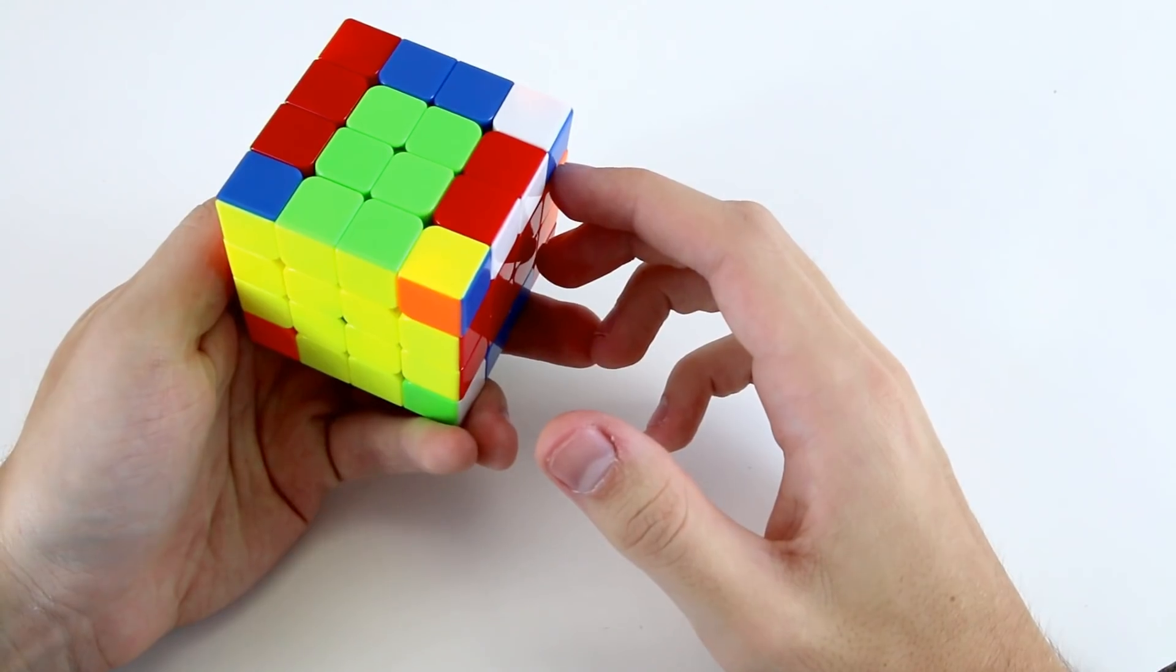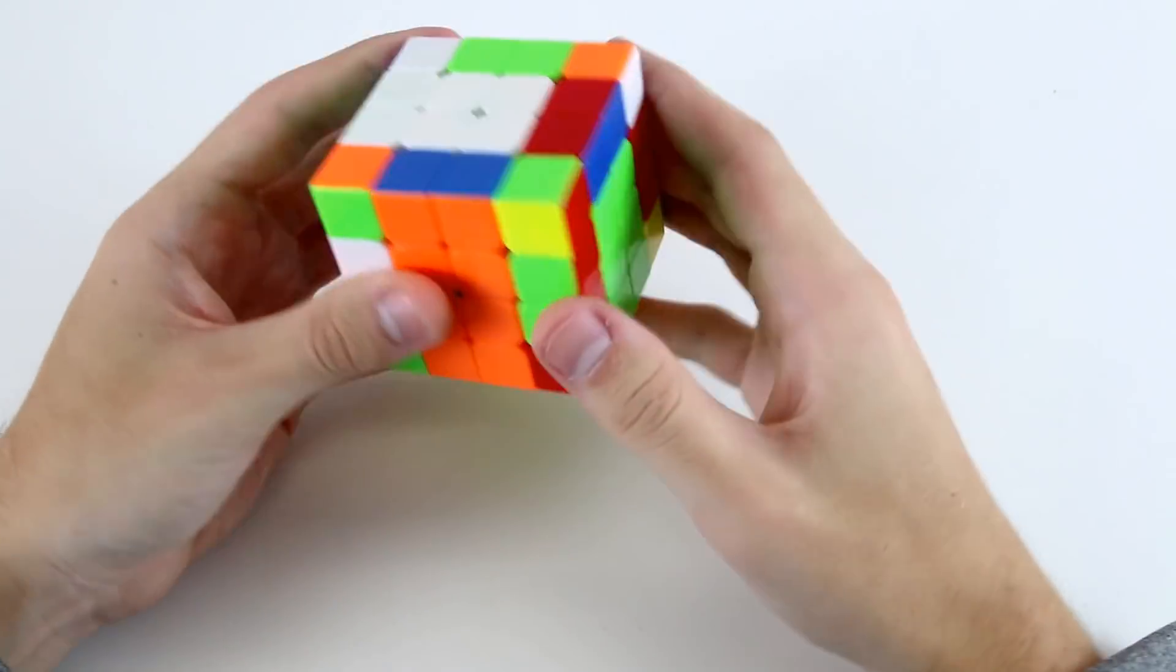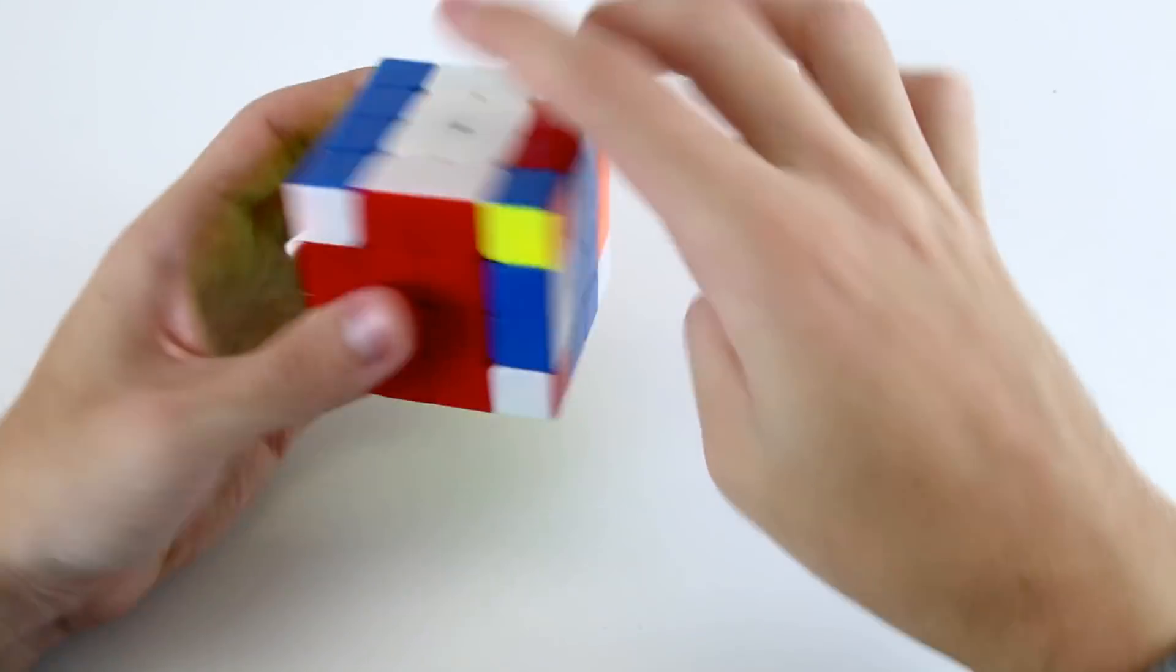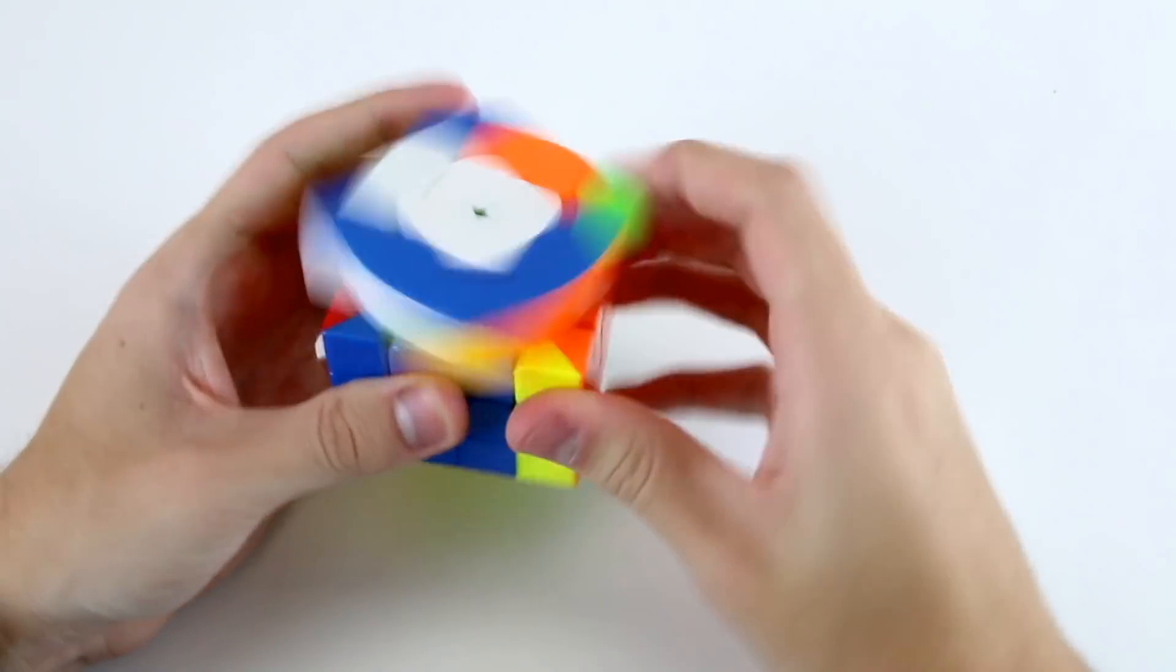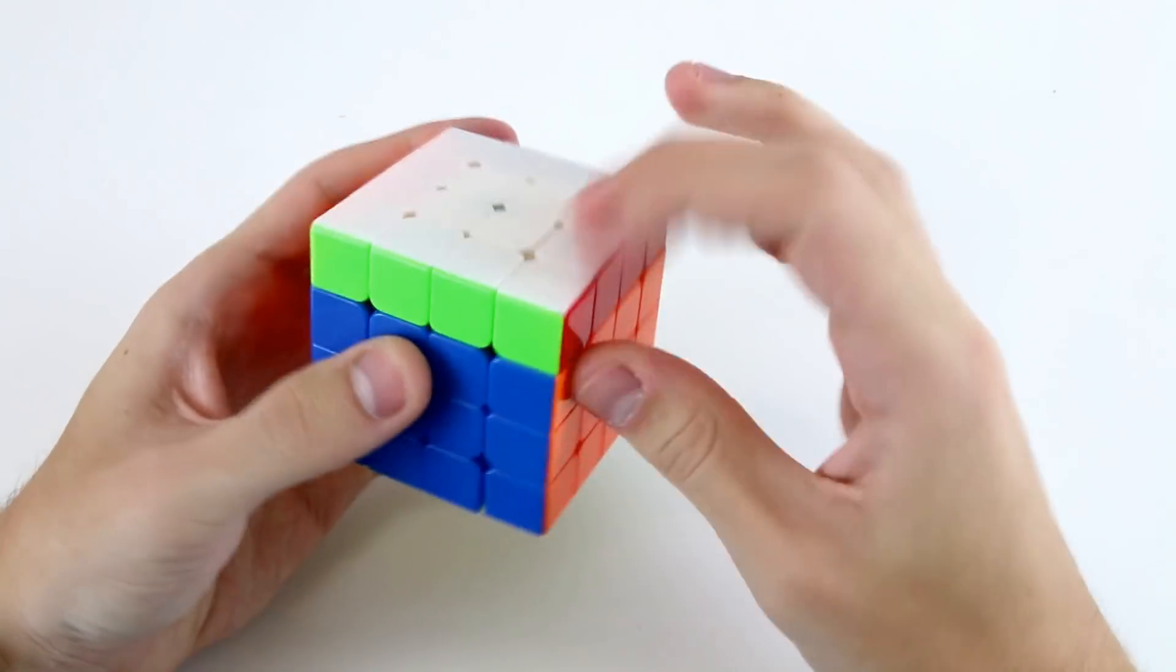So now I'm going to do three by three stage so I've got this pair, this pair, this pair, and this pair, OLL and PLL.